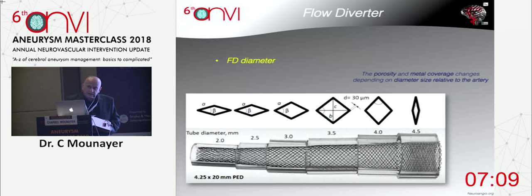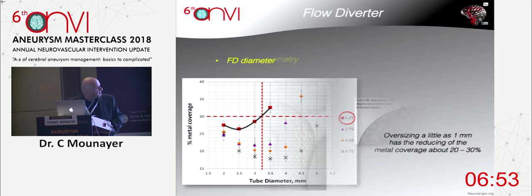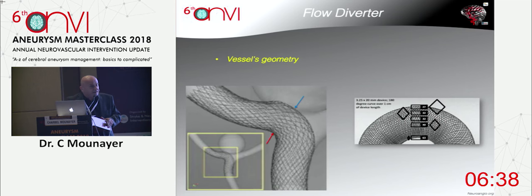This is why I say that if we want to modify flow diversion, we modify it over 1mm in diameter of the stent, and not more. We also have to take care of the geometry of the vessel. When you have a curve over the neck of the aneurysm, over the convexity the meshes are much more open than over the concavity of the artery.